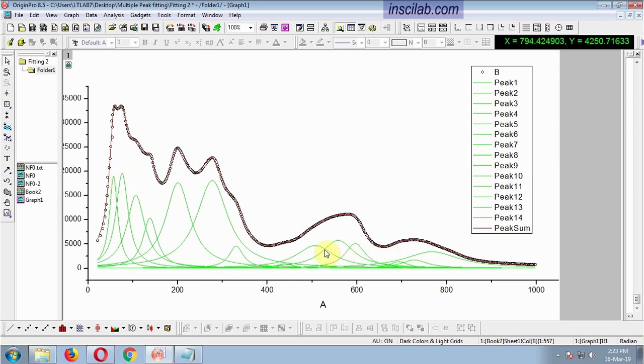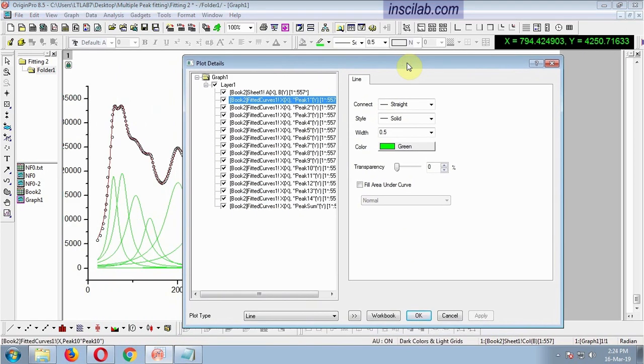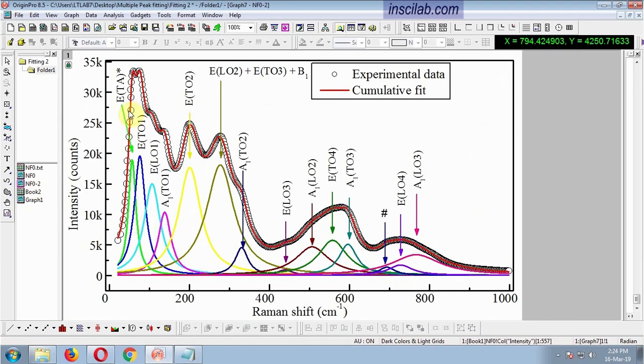Now I will show some useful functions for very new learners. Double-click to customize the individual peaks. Change the colors and width so that you can make it like this. Find out a theoretical or computational published work on your material, or at least a material with similar structure. Compare the peak positions with those reported computational values. Then you can index the peaks like this.